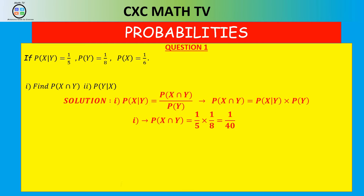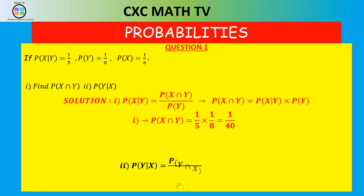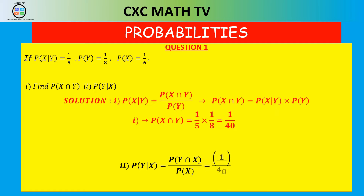Part two: find the probability of Y given X. Applying the definition, P(Y|X) = P(Y∩X) / P(X). The probability of Y∩X is the same as P(X∩Y), which is one over 40. Divided by P(X), which is one over six, the division gives us three over 20. That is question one.